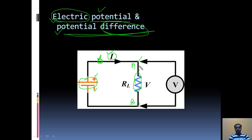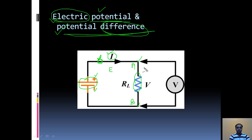Now, why have I taken this point and this point — because here you can see there is a load. When current flows through the circuit, some of the energy is utilized by that load and the rest is flowing through the wire. So suppose E is the total amount of energy flowing through this circuit; some amount is utilized by the load. If I measure the potential difference between these two points, I can find out the amount of energy utilized by this device. To measure this potential difference, a device called a voltmeter is connected here. We will read about voltmeter in the next slide.